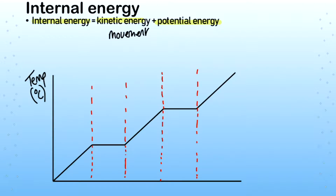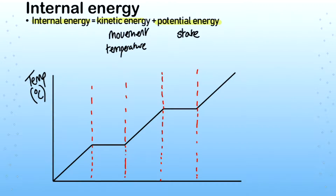If we're increasing the kinetic energy, we're increasing the temperature. The potential energy, on the other hand, is based on the state of the material. Imagine two materials with the same kinetic energy — one is a gas and one is a liquid. The gas will have more overall potential energy and therefore higher internal energy, even though its temperature is effectively the same. We can explore this further by looking at a heating curve graph.